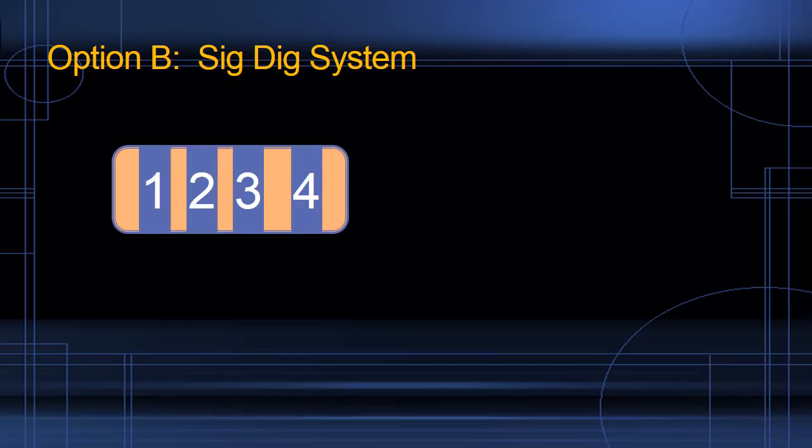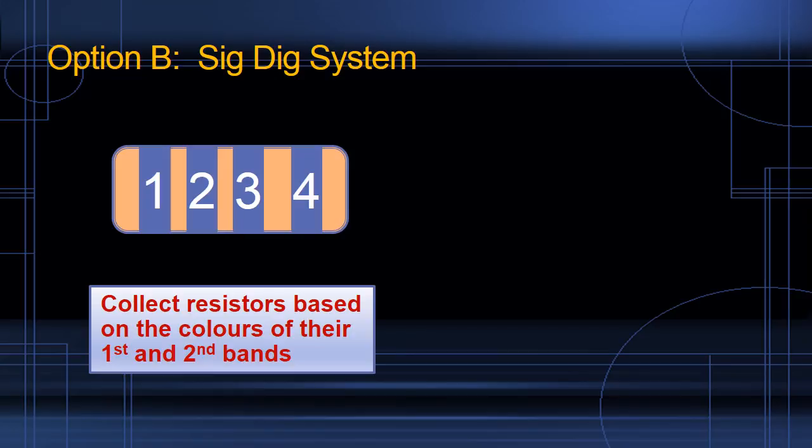If we decide to go with option B, the SigDig system, we're going to collect resistors based on the colors of their first and second bands.